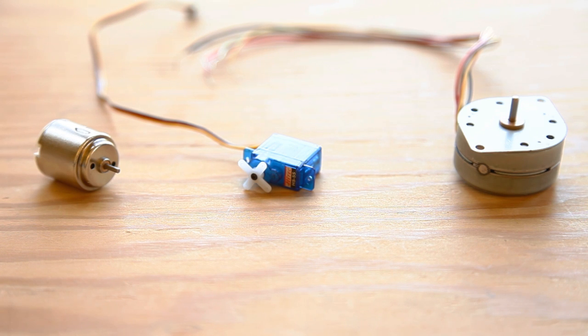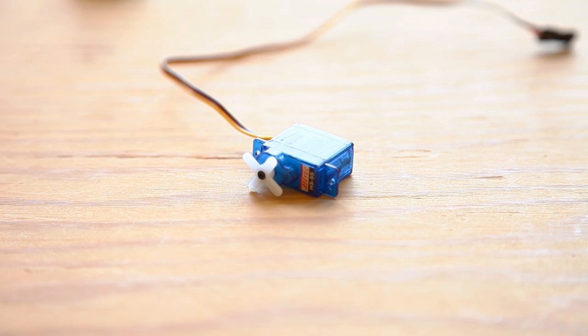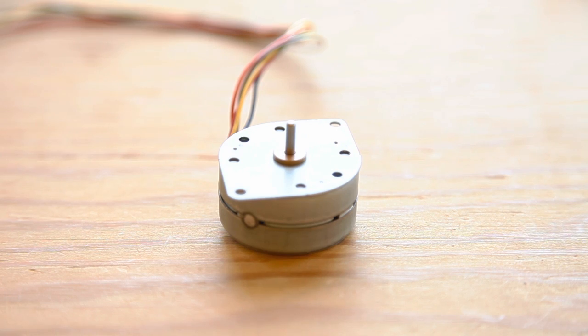In robots and other hobby electronics applications, there are three main types of motors used, and each type requires a different form of control. These three types are DC motor, servo motor, and stepper motor.